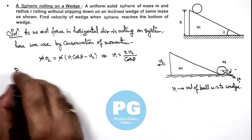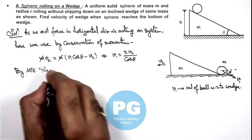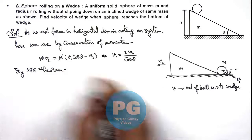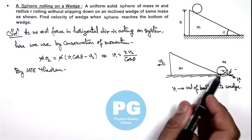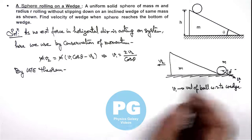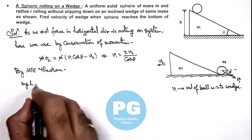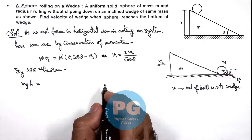And here we can write by work energy theorem, the kinetic energy gained in wedge as well as in that of ball is due to the work done by gravity. So here work done by gravity is mgh and that should be the gain in kinetic energy.